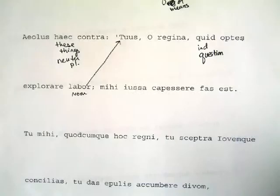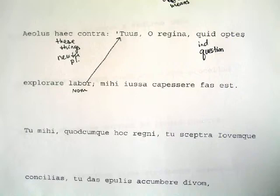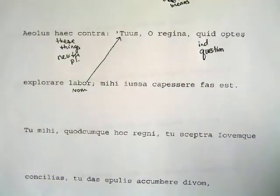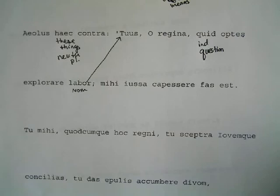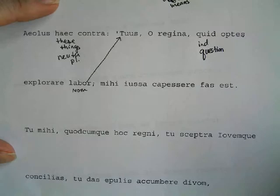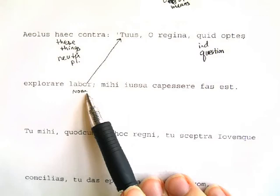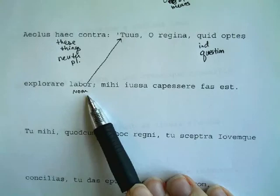There's a device called an enclosed line where the first word and the last word of a line go together. This technically spans two lines, making it an enjambment, but the phrase itself is enclosed because you go from tuus to labor — those go together. It's like bookends on a phrase, a nice way to wrap it up.